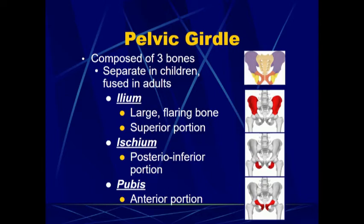The ischium is the posterior inferior portion, meaning it is the back bottom portion. One way to remember it — if someone has a bony butt, that is their ischium you are feeling if they were to sit on your lap. Then the pubis is the anterior or front portion. So you can see all of those pieces separate, but they are fused together to form one coxal bone on each side of the sacrum.